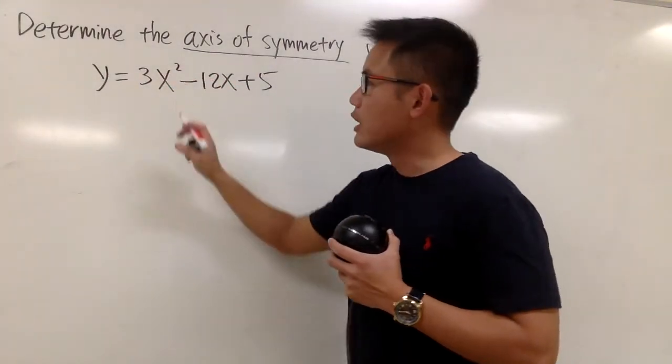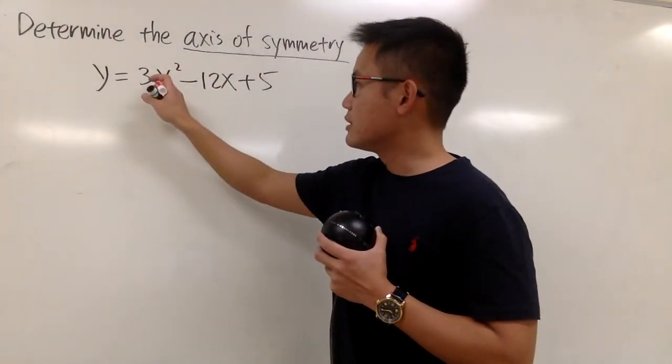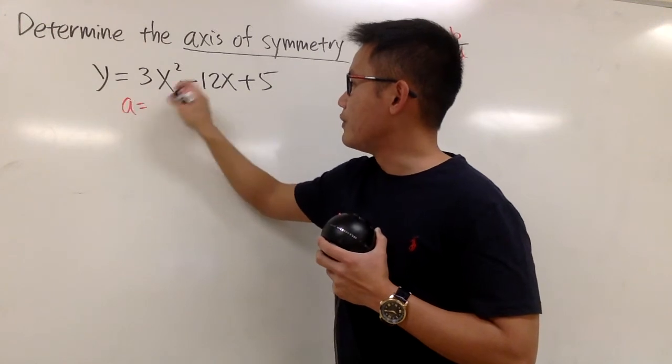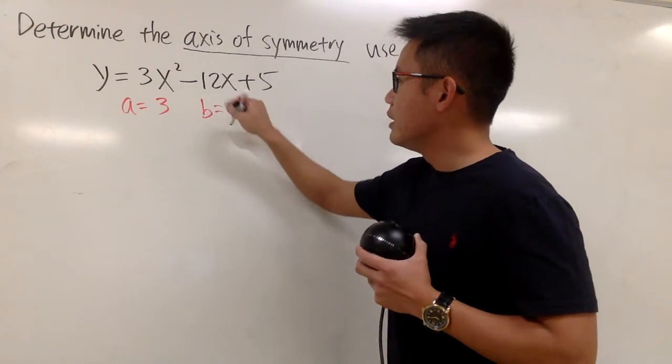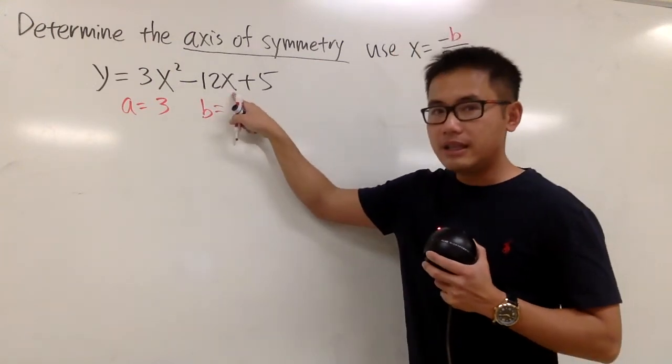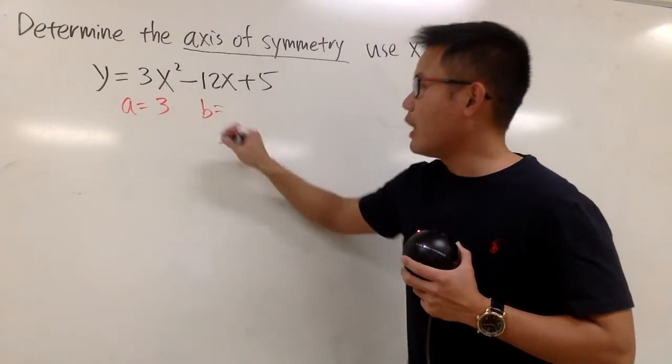Anyway, right here, let's see, what's the a value? It's just 3, right? Because that's the coefficient of x squared, so a is equal to 3. And be careful with the b value, namely the coefficient of x. In this case, it is negative 12, okay?